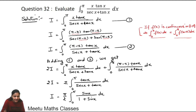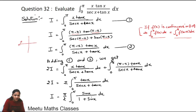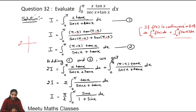Now, (π − x) stays as-is. tan(π − x) = −tanx, and sec(π − x) = −secx, since π − x gives an angle in the second quadrant where both tan and sec are negative. With three negatives, we are left with tanx/(secx + tanx) as the integrand.